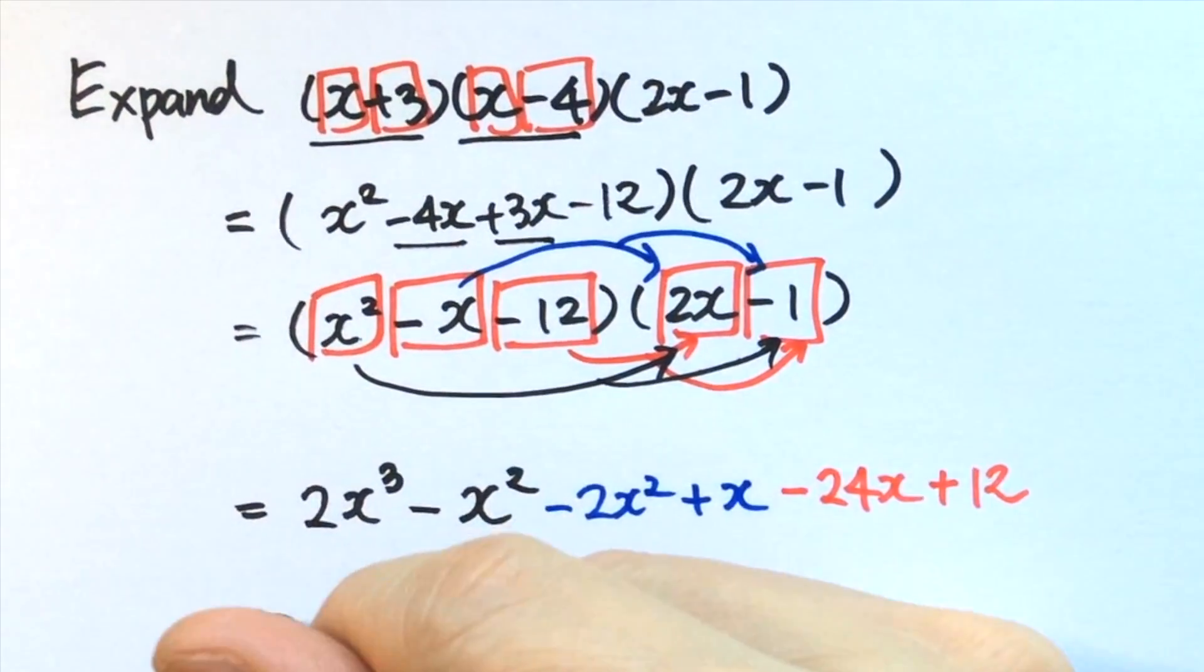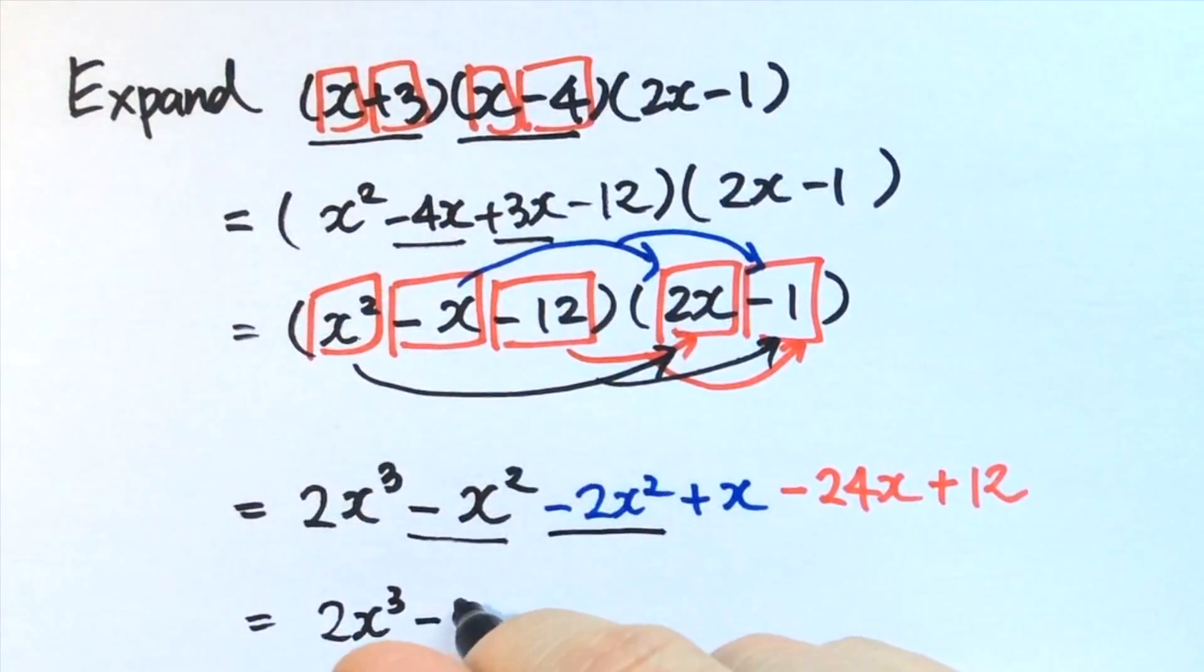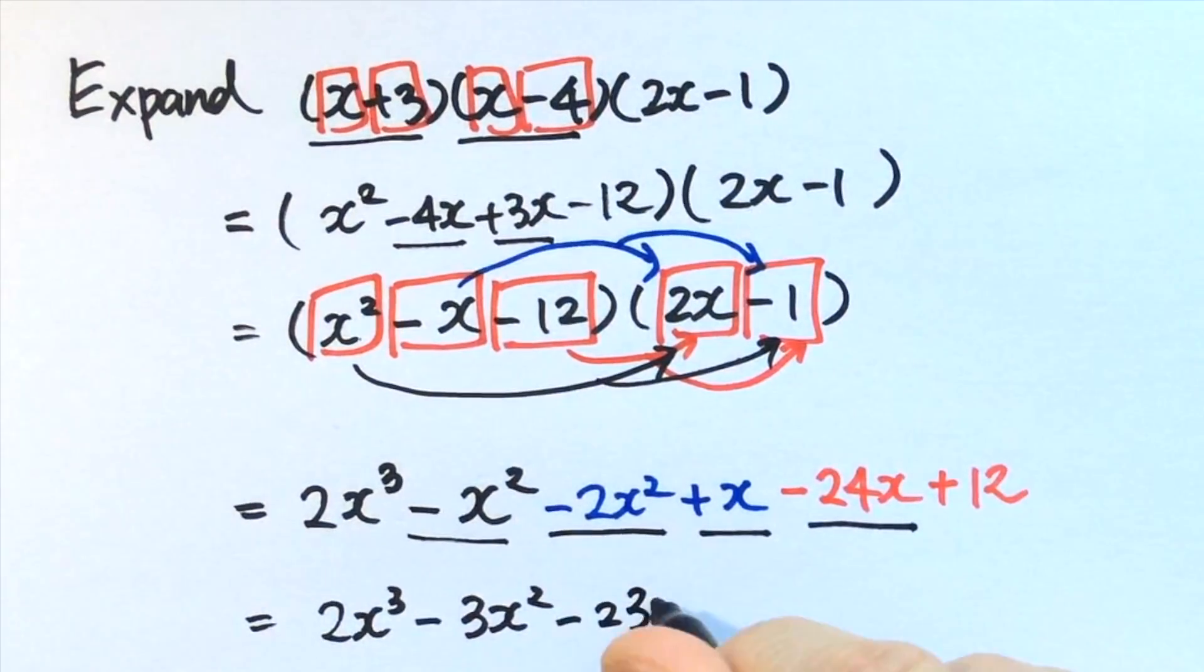Now we can collect the like terms and arrange the terms in descending order of x. Minus x squared minus 2x squared gives minus 3x squared. Plus x minus 24x gives minus 23x. Finally, plus 12.